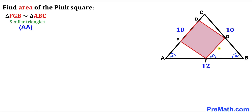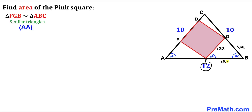Since they are similar, their side lengths have the same proportion. If the corresponding side in triangle ABC is 10, then in triangle FGB that side is 10A. Likewise the other leg is 10A, and the base corresponding to 12 becomes 12A, where A is a scaling constant.